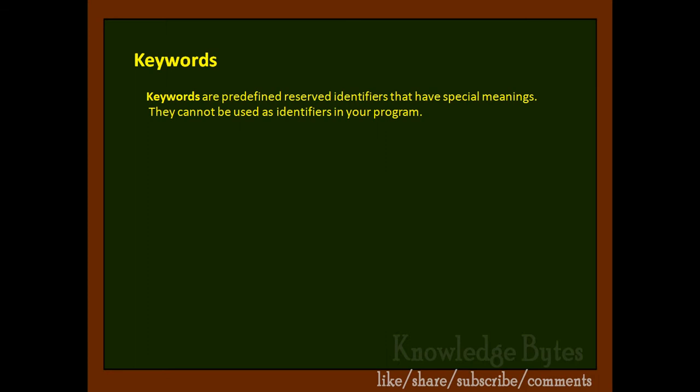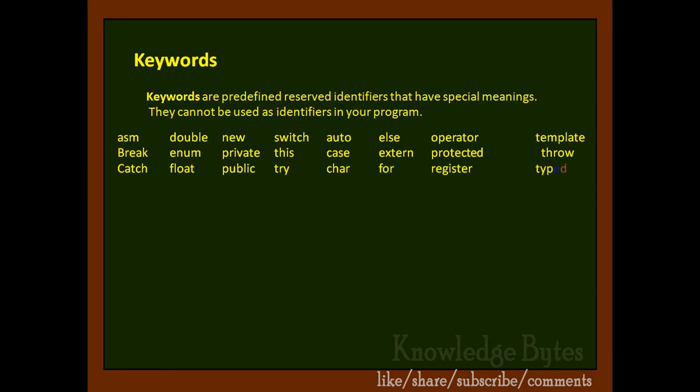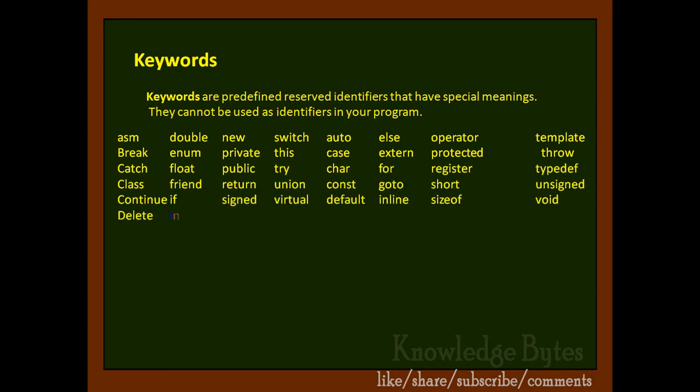There are 48 keywords in general C++. Those are like: asm, double, new, switch, auto, else, operator, template, break, enum, private, this, case, external, protected, throw, and so on, up to while. Just take a look.